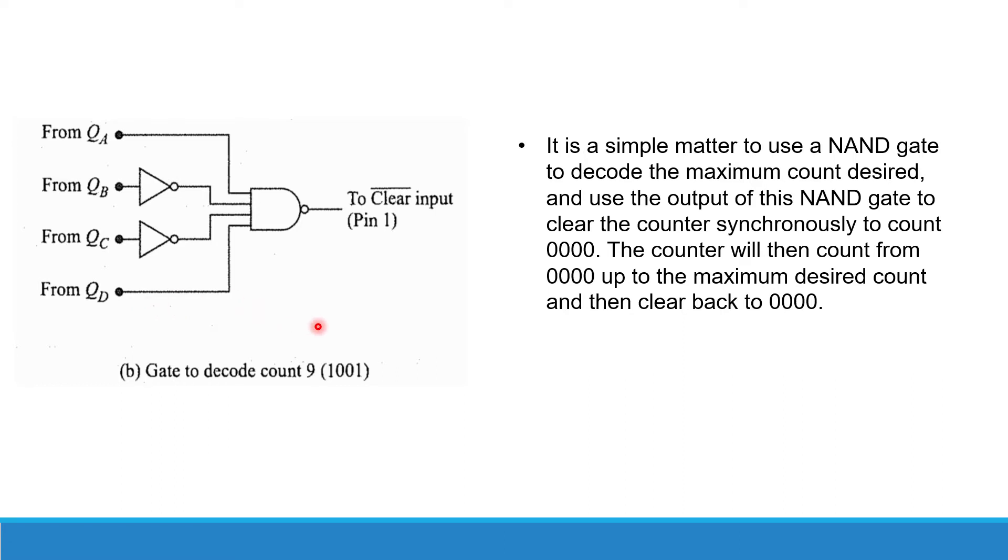It is a simple method to use the NAND gate to decode the maximum count desired and use the output of this NAND gate to clear the counter synchronously to count 0000. The counter will then count from 0000 up to the maximum desired count and then clear back to 0000.